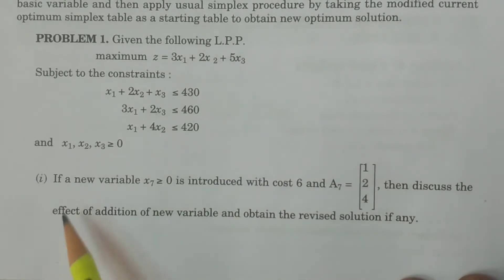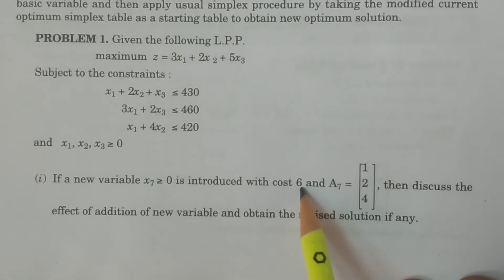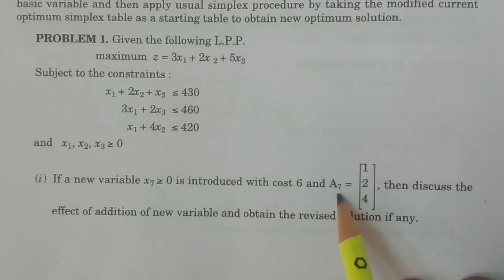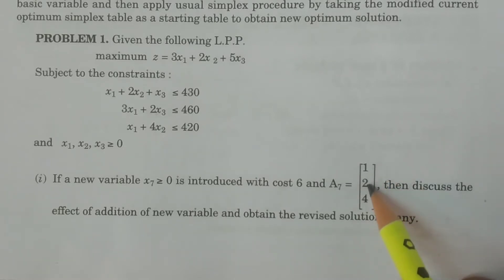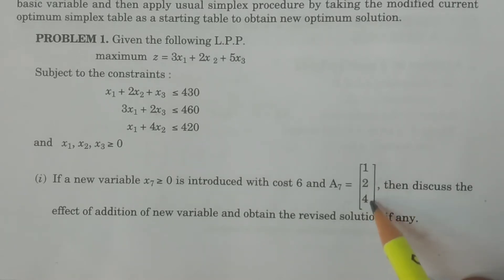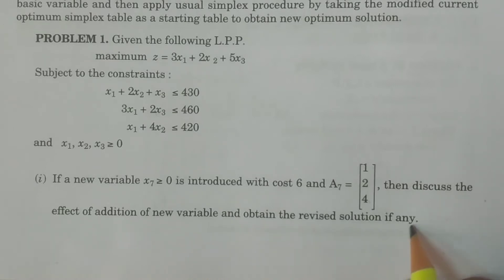Question 1: If a new variable x7 ≥ 0 is introduced with cost 6, and coefficient matrix a7 = (1, 2, 4) — meaning 1·x7 in the first constraint, 2·x7 in the second, and 4·x7 in the third — discuss the effect of adding this new variable and obtain the revised solution if any.